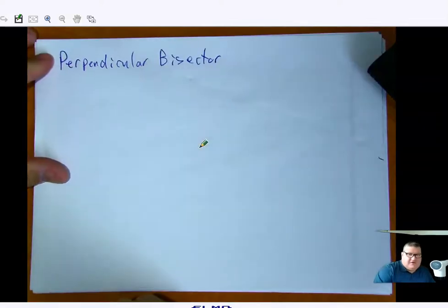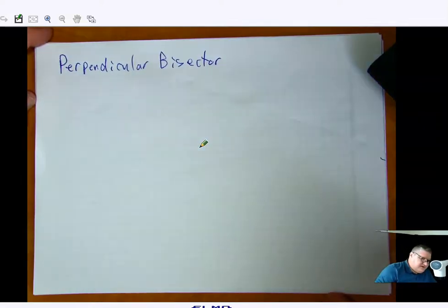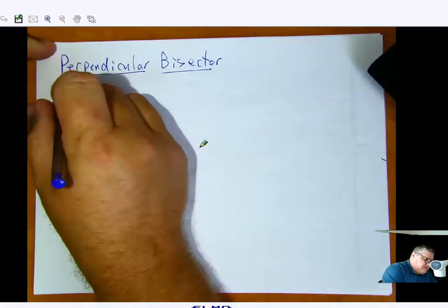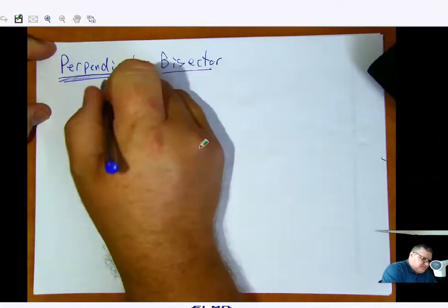Now, ladies and gentlemen, we don't name things creatively in math class. If it's a perpendicular bisector, it's definitely going to be perpendicular.